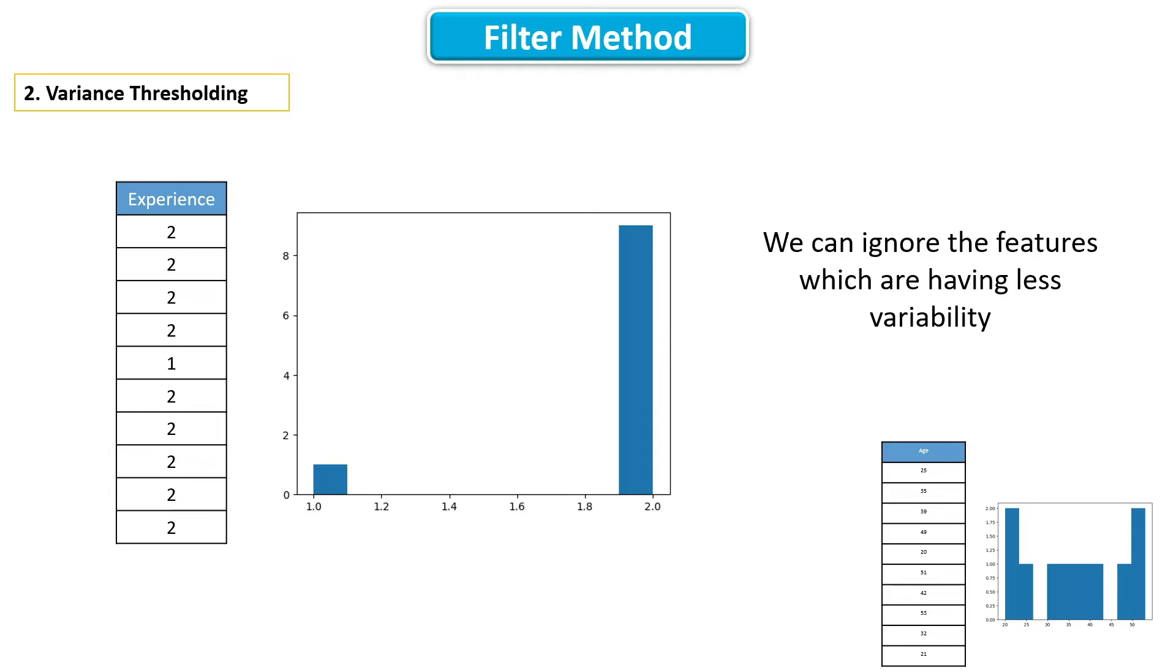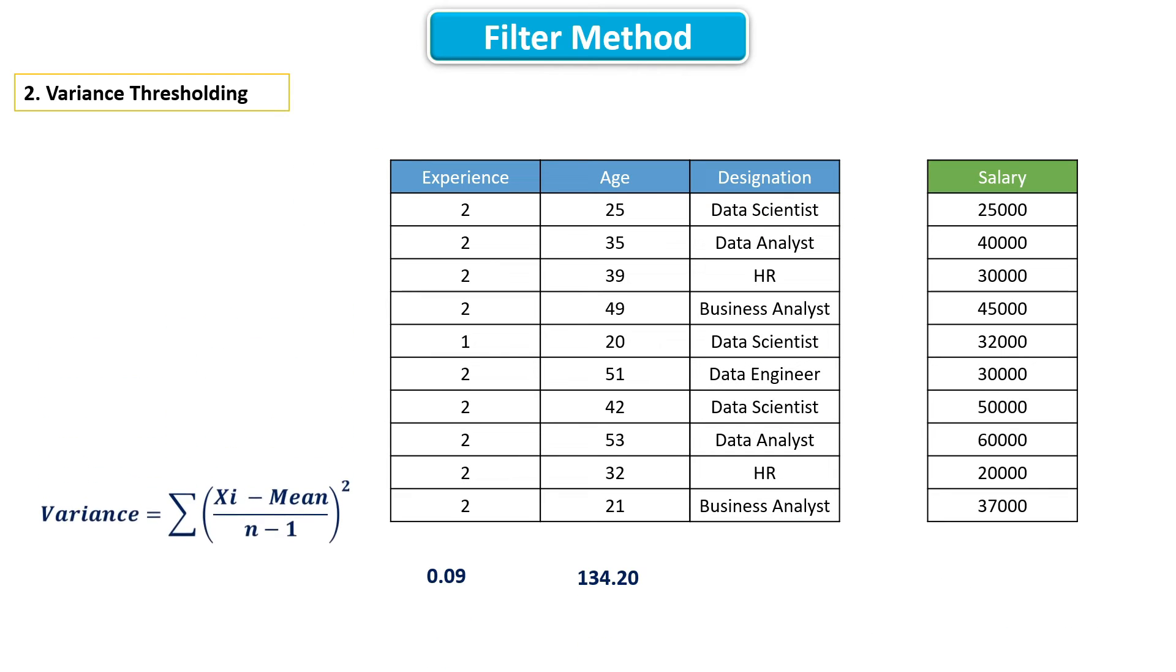Now, let's see how to do this. First, we have to calculate variance of all the numeric features. Then, we can drop the features which are having less variance than the threshold value.